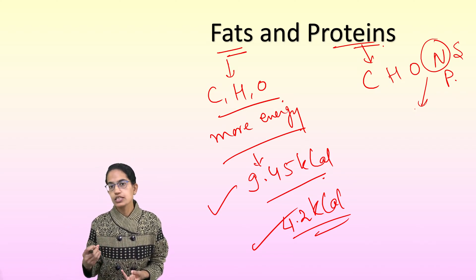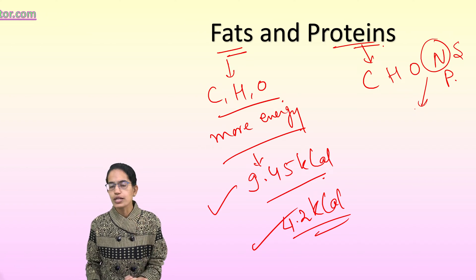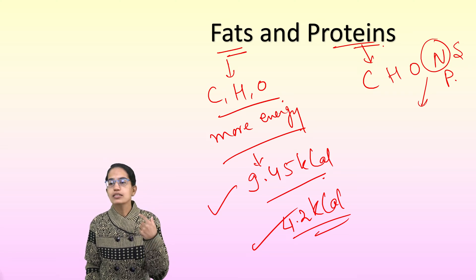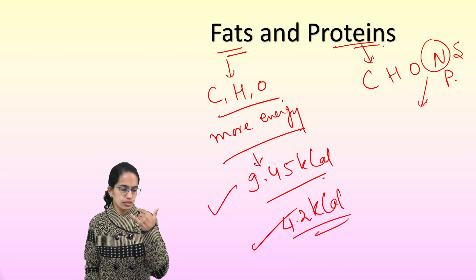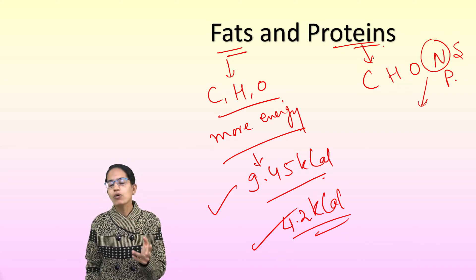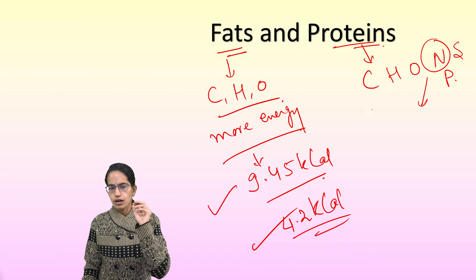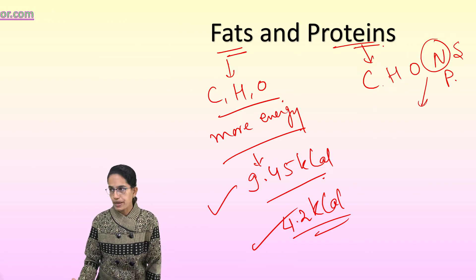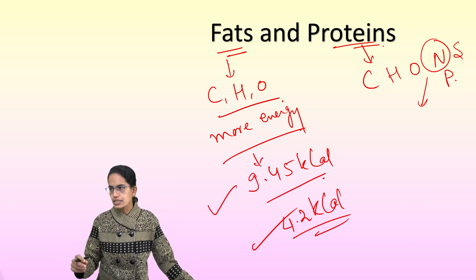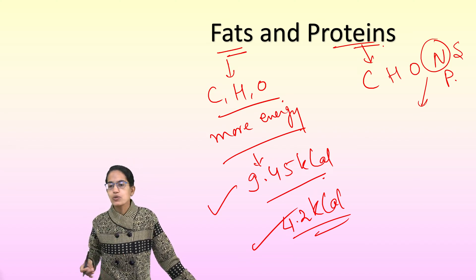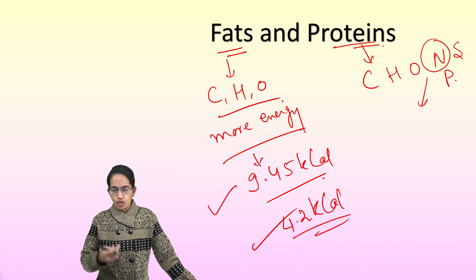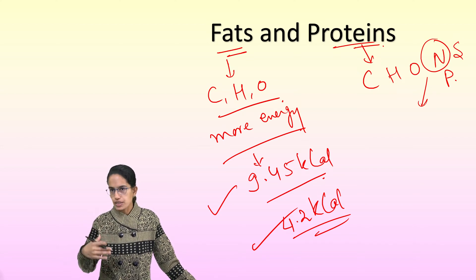Foods rich in protein include pulses, sprouted cereals, milk and its formulations such as curd, yogurt, paneer, and cheese. Proteins provide material for growth, maintenance, and repair, help in muscle contraction, and are considered the ultimate form of energy. Deficiency of protein can lead to diseases like Marasmus and Kwashiorkor, which are protein-energy malnutrition diseases.